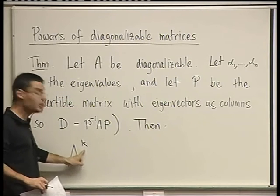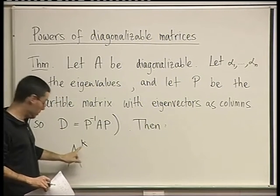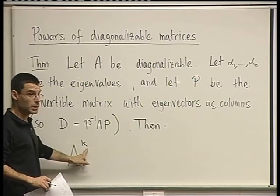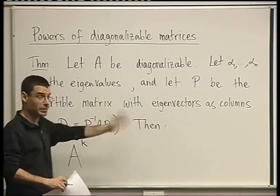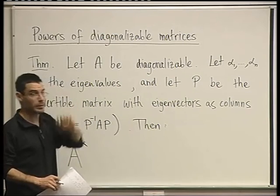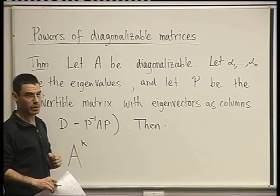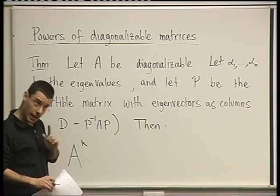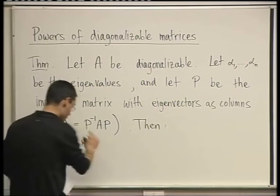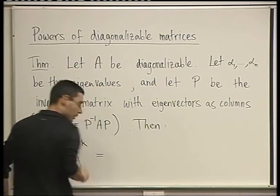But if K is 100, doing A to the power 100 is multiplying A by itself 100 times. That's kind of a lot of work. So the theorem tells you, here's a shortcut.